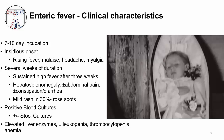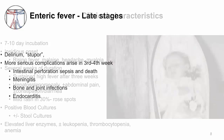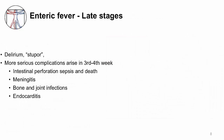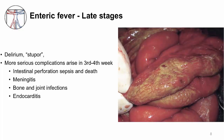In the late stages of enteric fever, you can see delirium, called stupor. Severe complications can also happen. Intestinal perforation occurs from rupture of the Peyer's patches. In the intraoperative photo on the slide, you can see inflammatory patchy exudates and tears in the intestine of a patient from Nepal. Intestinal perforation and subsequent sepsis is what kills most patients. Infection can also spread to the brain, bone, joints, and heart.